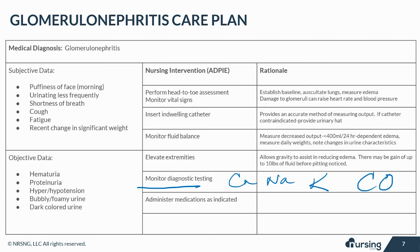Monitor renal function labs, including BUN, creatinine, albumin, and GFR, which is the glomerular filtration rate. Monitor the amount of protein lost in the urine. Serum protein levels will be decreased, while urine protein levels will be elevated. Also, a kidney biopsy may be required, especially if the patient is diabetic.